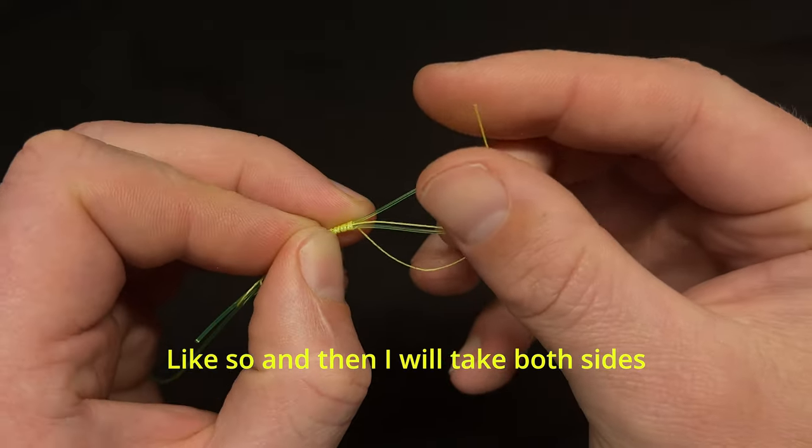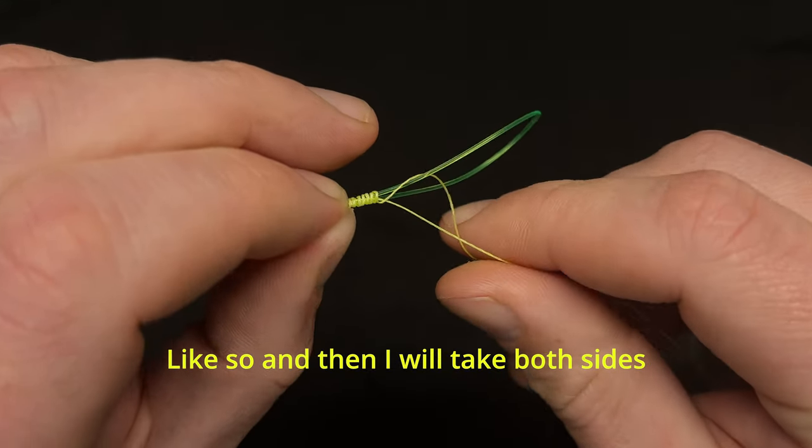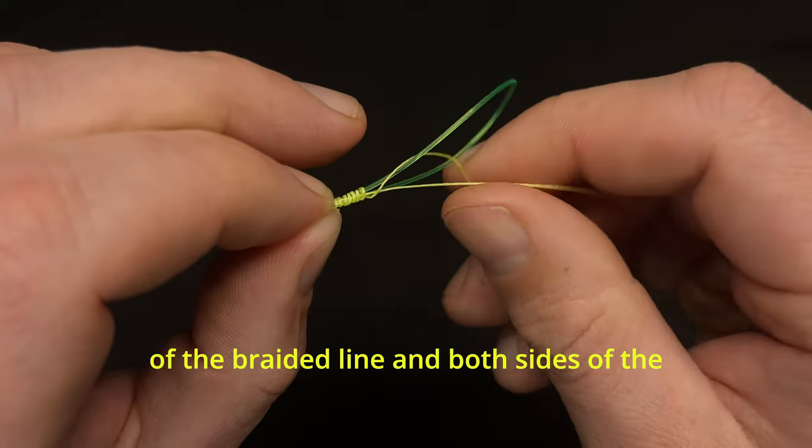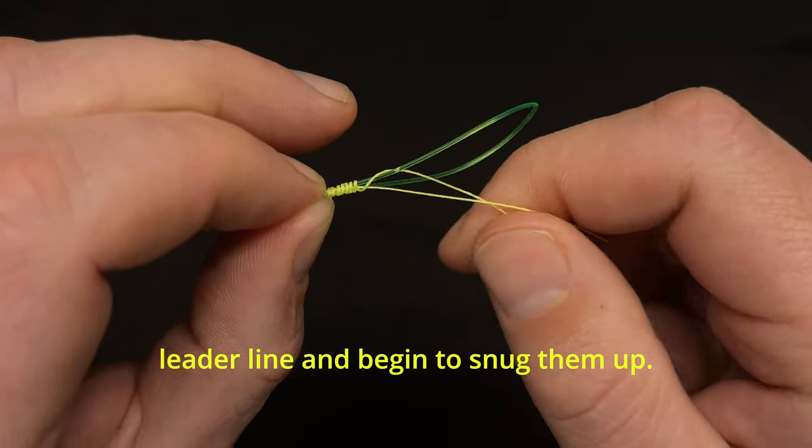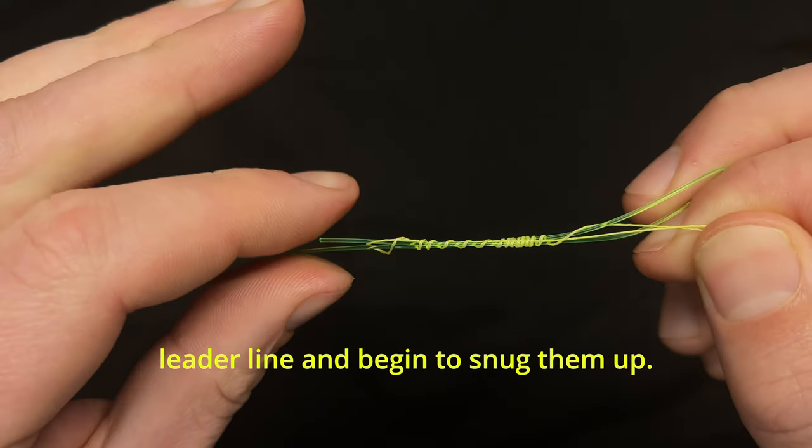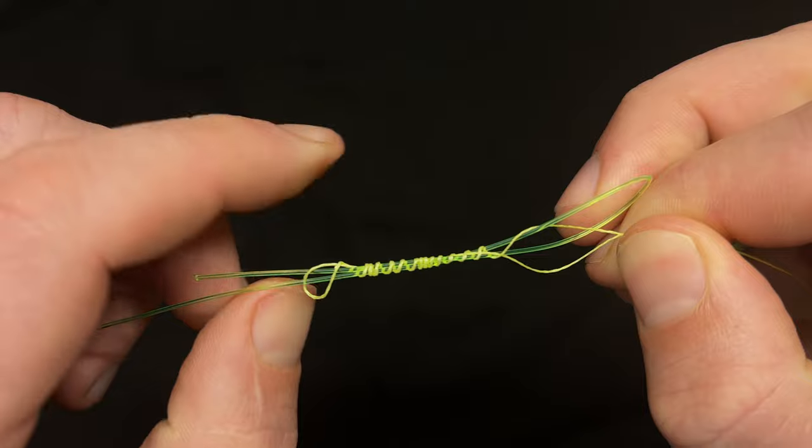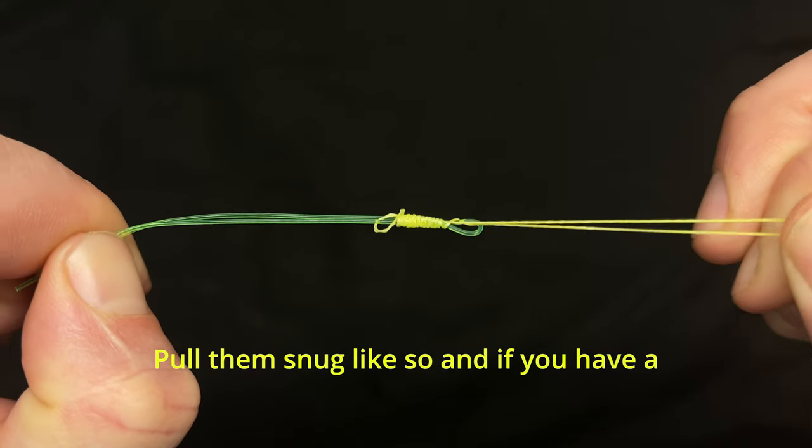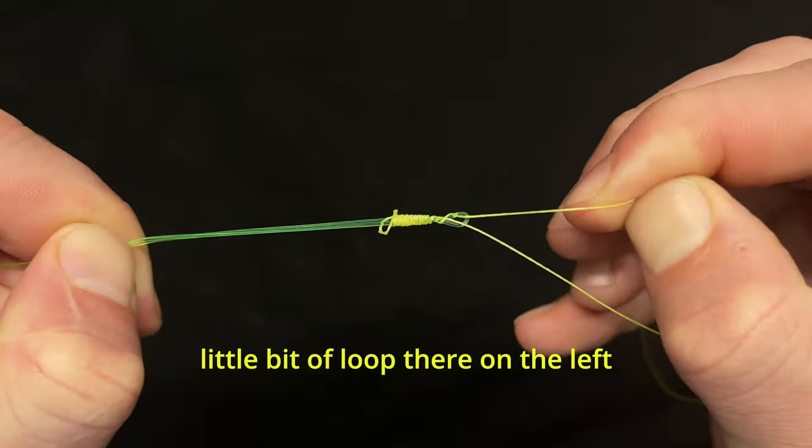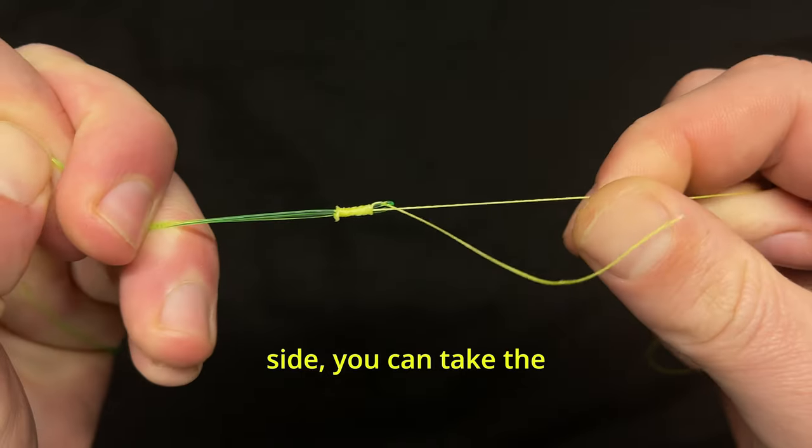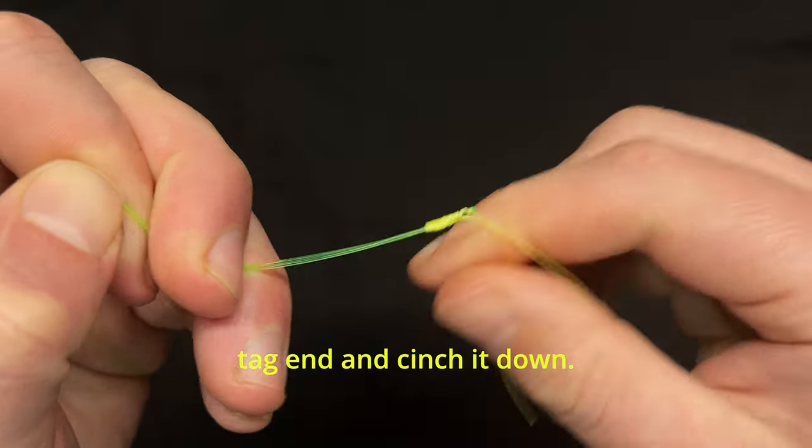Then I will take both sides of the braided line and both sides of the leader line and begin to snug them up. If you have a little bit of loop there on the left side, you can take the tag end and cinch it down.